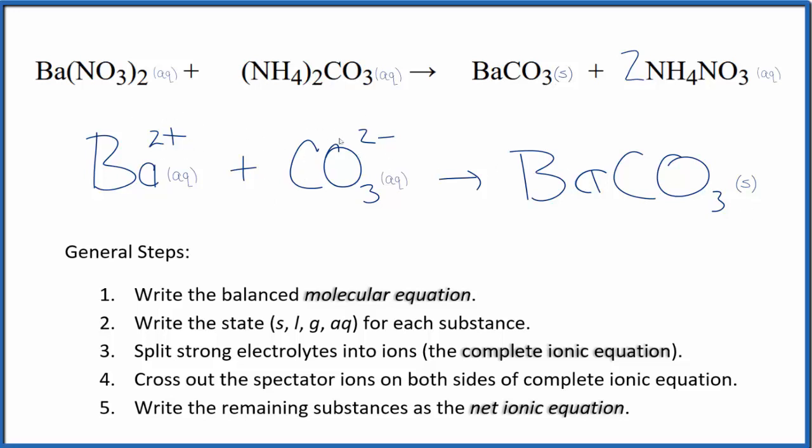Two plus, two minus. That's a net charge of zero. This is a neutral compound net charge of zero. This is Dr. B with the balanced net ionic equation for Ba(NO3)2 plus (NH4)2CO3. Thanks for watchin'.